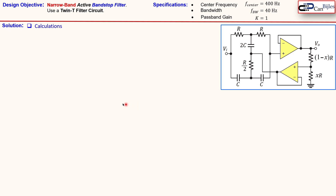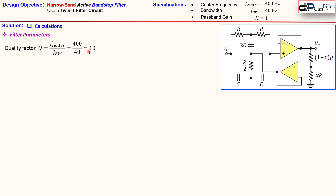Let's go to the calculations. First we look at our filter parameters. In this case we have only one parameter to calculate, which is the quality factor Q. We can calculate it right away as 400 over 40, which equals 10.